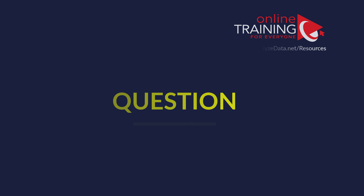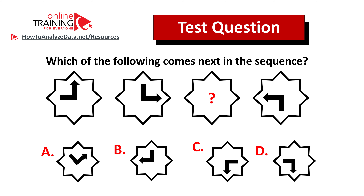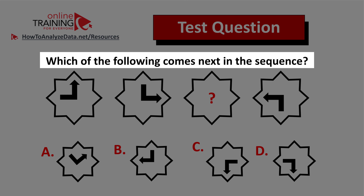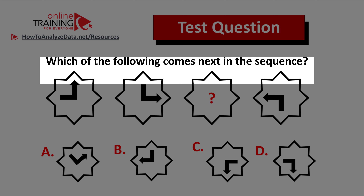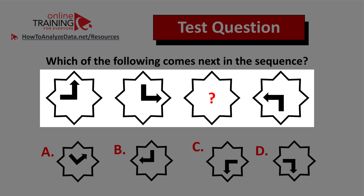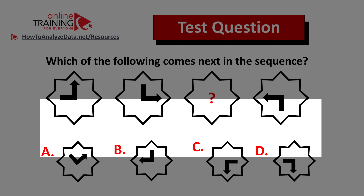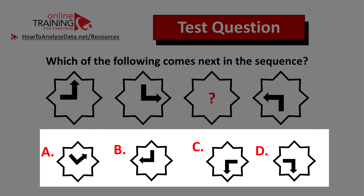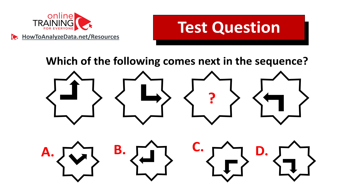Here's a question from the test. Which of the following comes next in the sequence? You have a sequence of four shapes — the third shape is missing — and you need to select the right shape out of four choices at the bottom: a, b, c, and d.